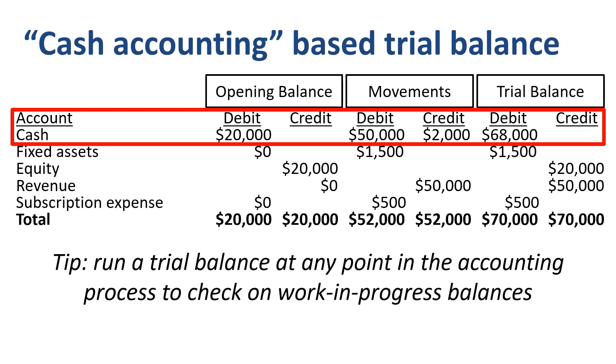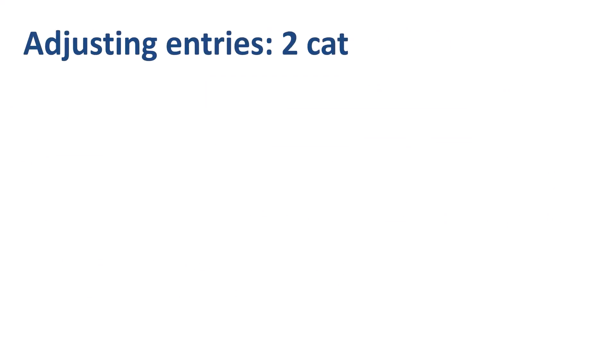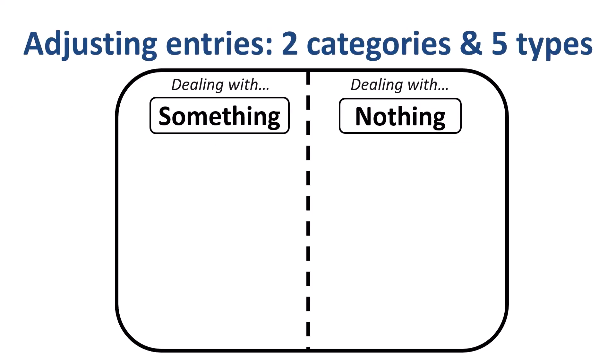You go through the balances and refine them. You look for more information about the transactions to see the whole picture and validate whether the balances are correct. Once we have this trial balance, we can review whether we need any adjusting entries. There are two categories of adjusting entries: adjusting entries that deal with something, and adjusting entries that deal with nothing.